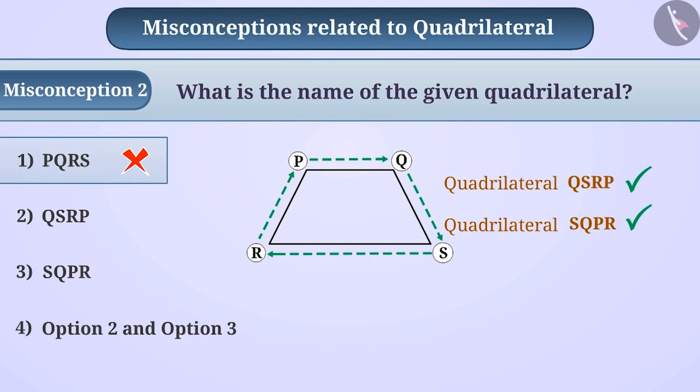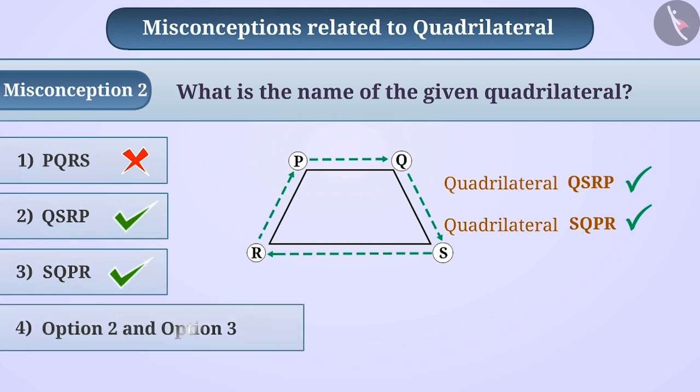Hence, option 2 and option 3 are correct answers. That means both are correct options. In option 4, both option 2 and option 3 are given. So we will not choose option 2 or option 3, but choose option 4, which is the correct answer.